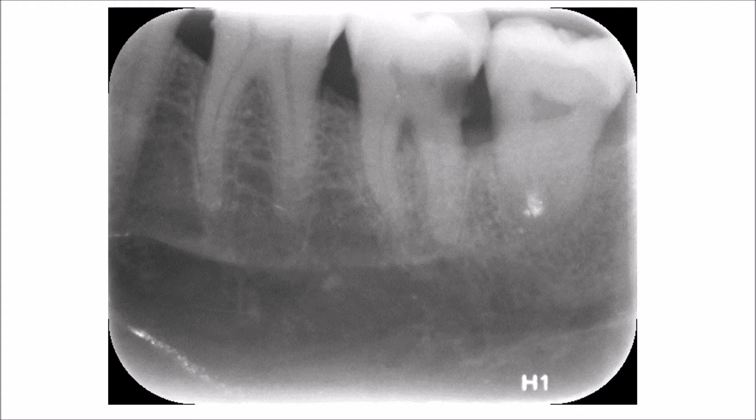This periapical radiograph of the lower molars — first, second, and third molars — shows another case of a patient suffering from periodontal disease, with moderate horizontal bone loss and bifurcation involvement of the lower second molar.